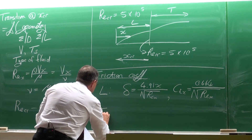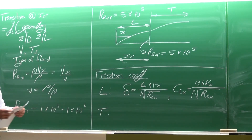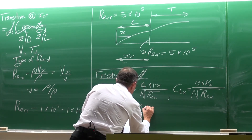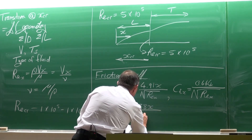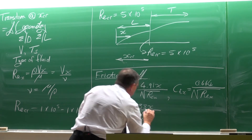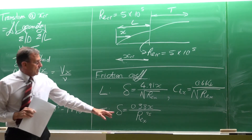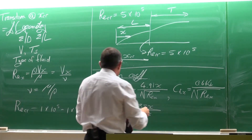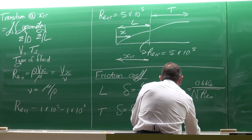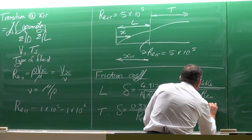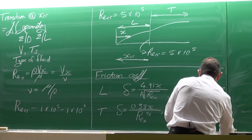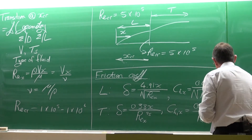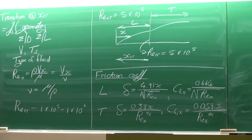For turbulent flow, the boundary layer thickness is δ = 0.38x / Re_x^(1/5), and the local friction coefficient is Cf_x = 0.059 / Re_x^(1/5).